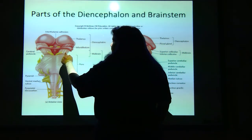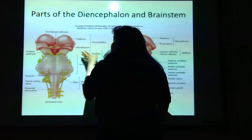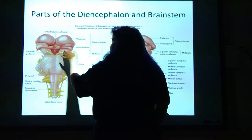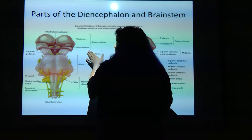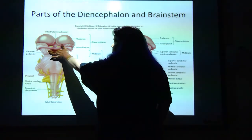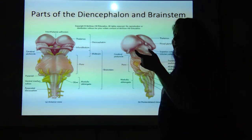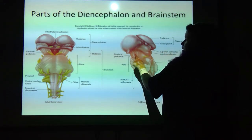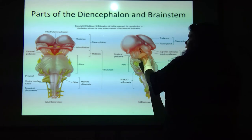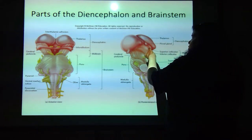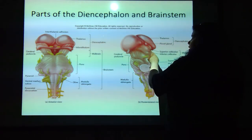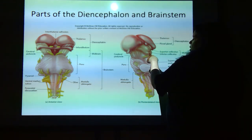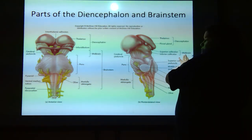When you get to the infundibulum and the cerebral peduncle, now we're talking brainstem — the midbrain. The midbrain is actually the smallest part of your brainstem. Here it is, the cerebral peduncle. And back here, you've got the superior colliculus and the inferior colliculus — these two lumps on the posterior side of the midbrain.